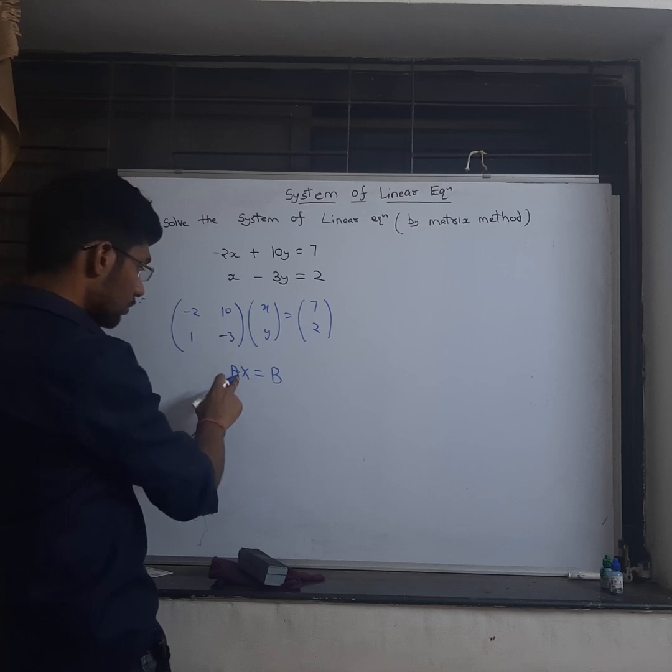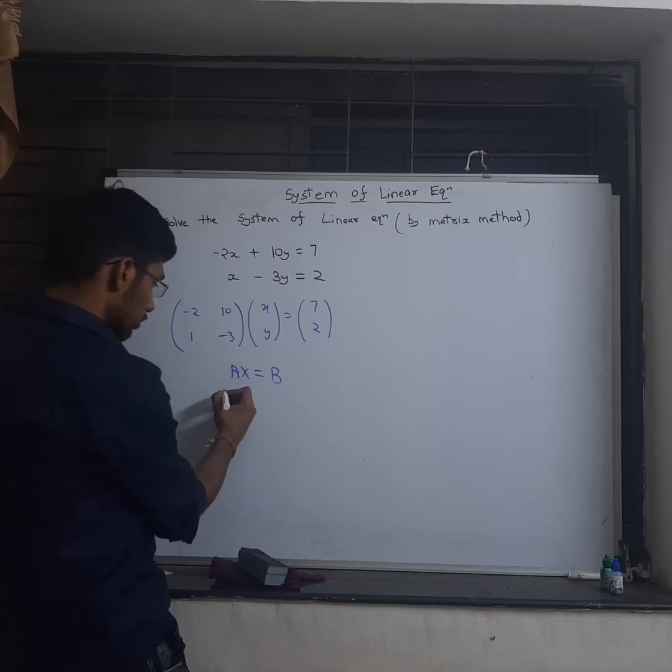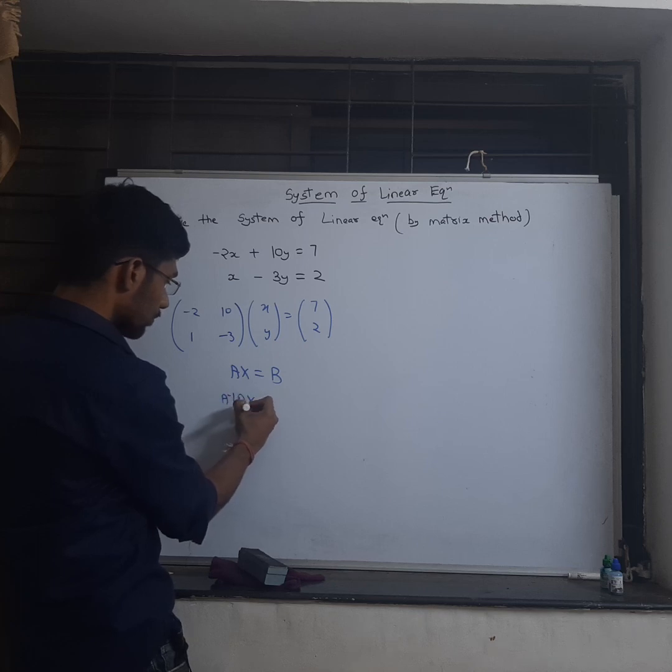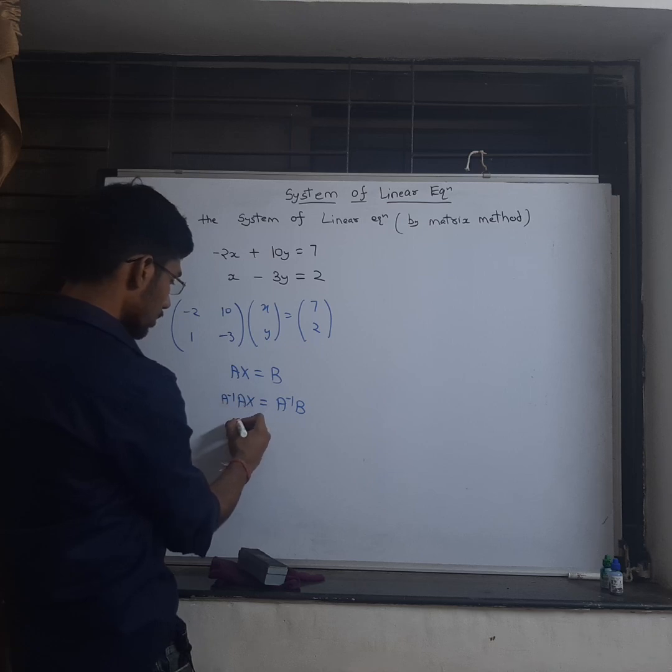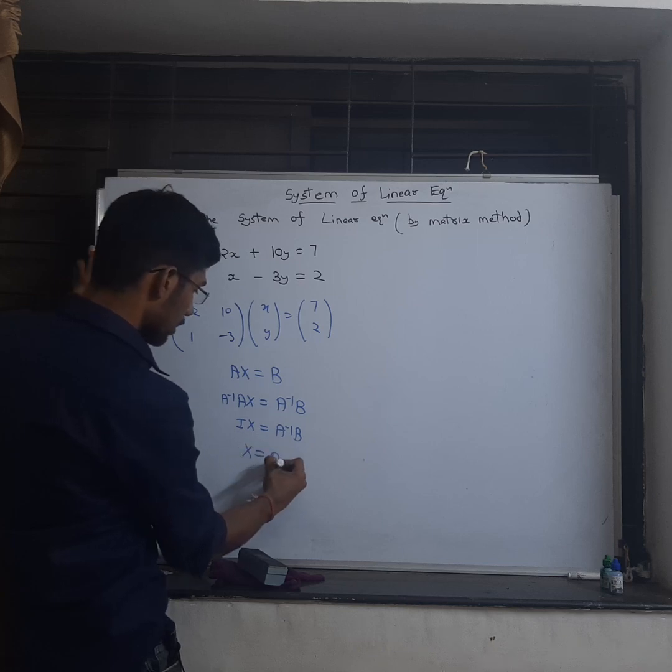So I have to eliminate A from this side. To do that I have to multiply by A inverse both sides. So A inverse A is identity matrix, A inverse B, so X equals A inverse B.